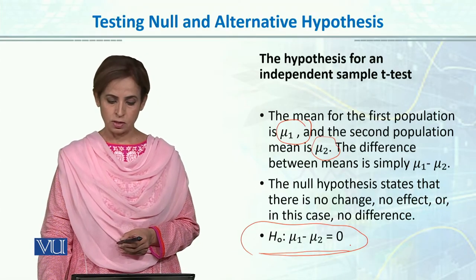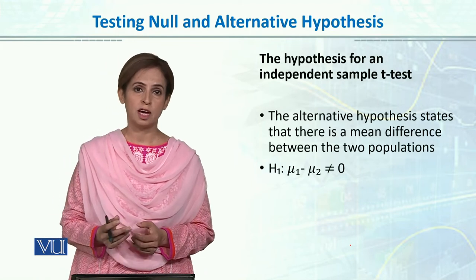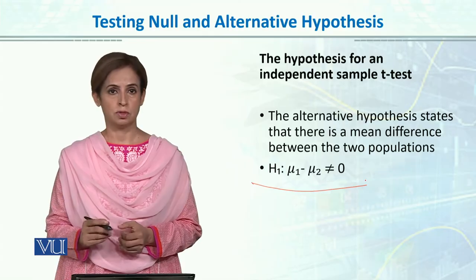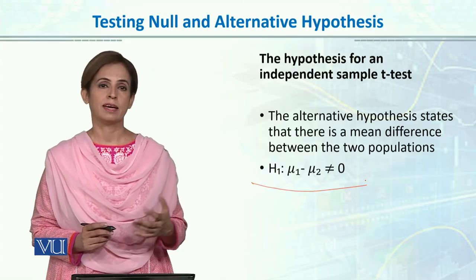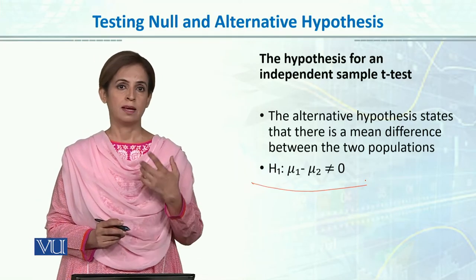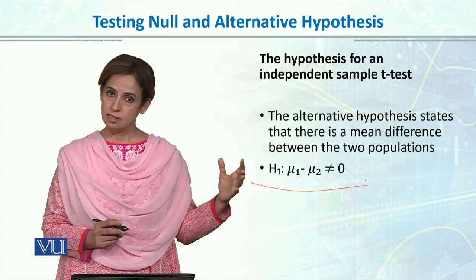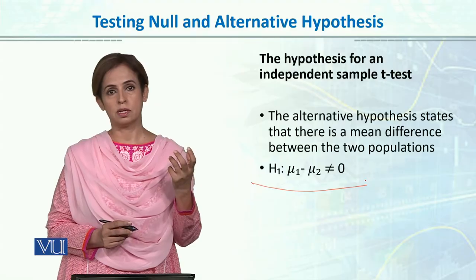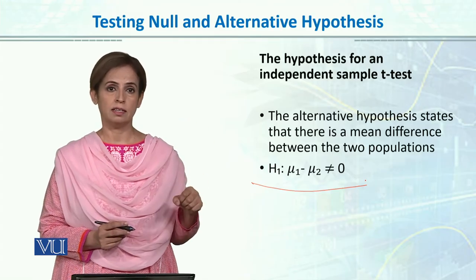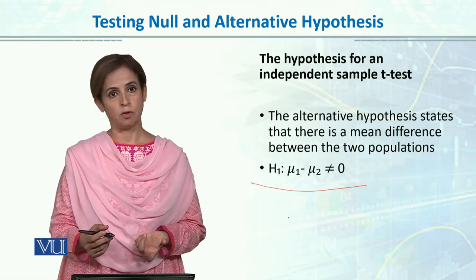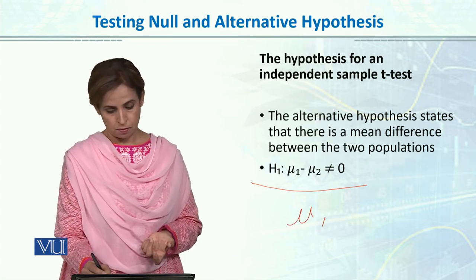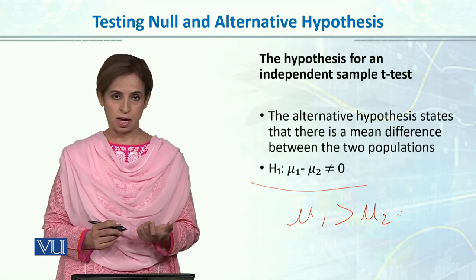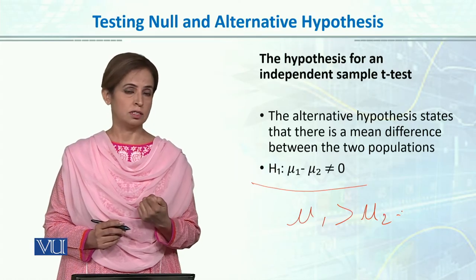Against the null hypothesis, if we want to formulate our alternative research hypothesis, we state that mu1 minus mu2 is not equal to zero. SPSS usually tests on two tails. However, if we manually do the test and our research supports that one group is consistently greater than the other, we may formulate mu1 greater than mu2, or mu1 less than mu2. But mostly in the alternative hypothesis, we state the difference is not equal to zero.